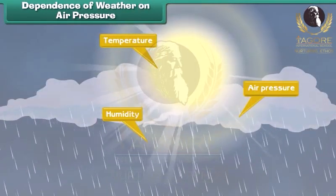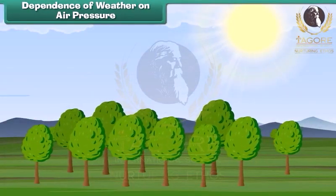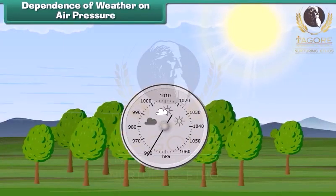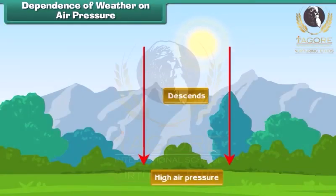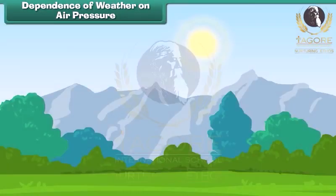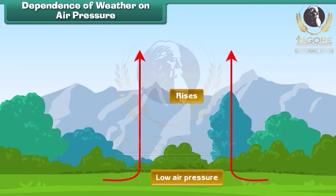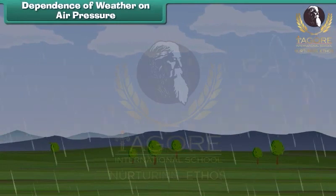What about air pressure? You might not realize it, but the air around you actually has a weight. We measure air pressure with a device called the barometer. In areas of high pressure, the air slowly descends to the earth's surface, and high pressure areas are associated with clear, sunny days. In areas of low pressure, air rises up into the atmosphere, and low pressure areas have high humidity, clouds, rain, and other kinds of precipitation.